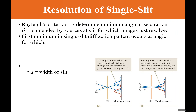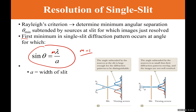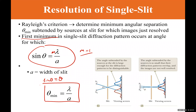The Rayleigh criterion determines the minimum angle separation theta_min subtended by sources at the slit for which the image is just resolved. The first minimum in a single-slit diffraction pattern occurs where sin(theta) = m*lambda/a, with m = 1 and a being the slit width. Using the small-angle approximation, sin(theta) ≈ theta, so theta_min = lambda/a.